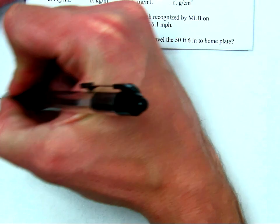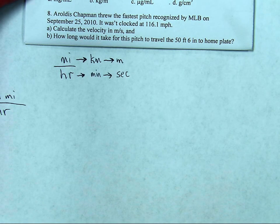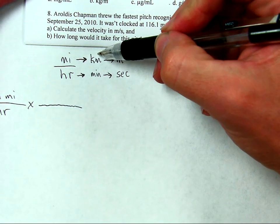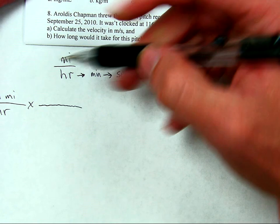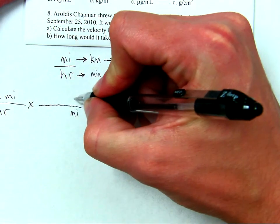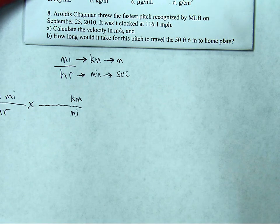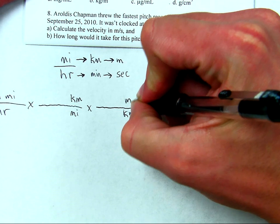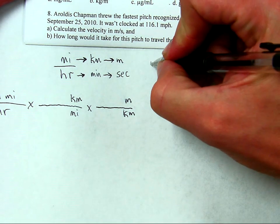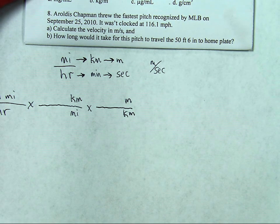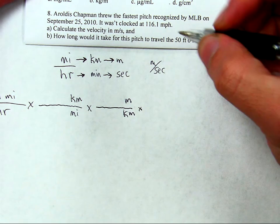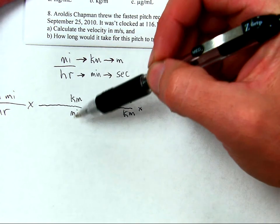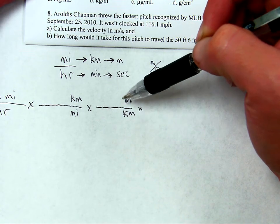116.1 miles per hour. Let's do this conversion first. Converting miles to kilometers means miles to kilometers goes on here — we're going to convert miles to kilometers so that miles cancels miles. Then we're going to convert kilometers to meters, so we have meters on top, just as it needs to be for the final answer of meters per second. Next, we need to change hours into seconds. At this point, miles cancels miles, kilometers cancels kilometers, and we would have meters per hour — but we need meters per second.